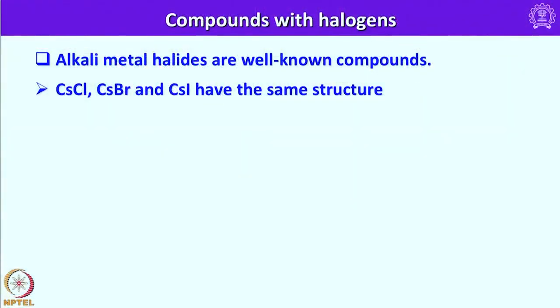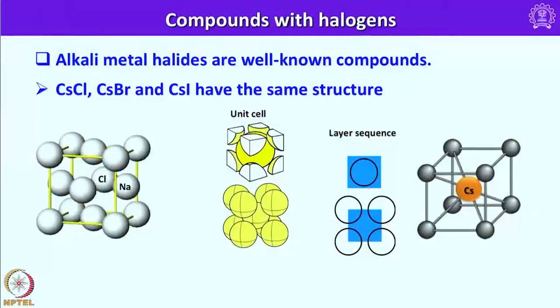Let me look into the compounds with halogens. Alkali metals react with all types of halogens to form halides — all combinations are possible. Lithium can react with fluorine, chlorine, bromine, and iodine to form the corresponding halides. Cesium also can form all halides, but they have slightly different properties and structures. Cesium chloride, cesium bromide, and cesium hydride have the same structure, whereas sodium chloride has a different structure.